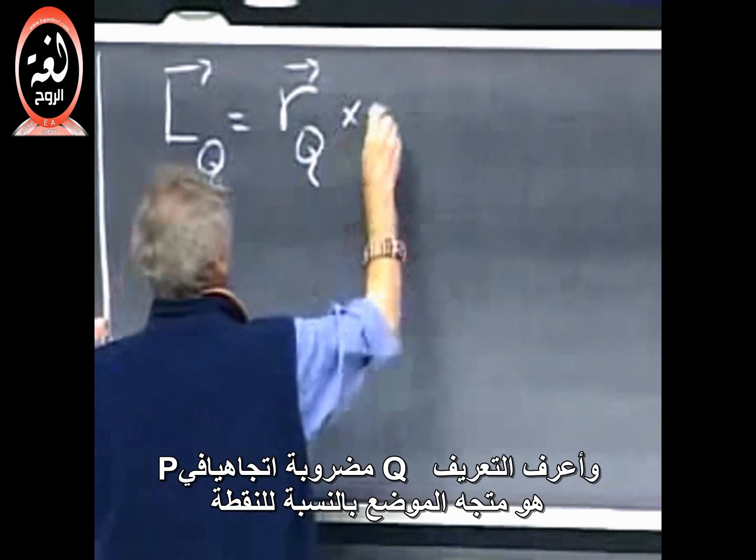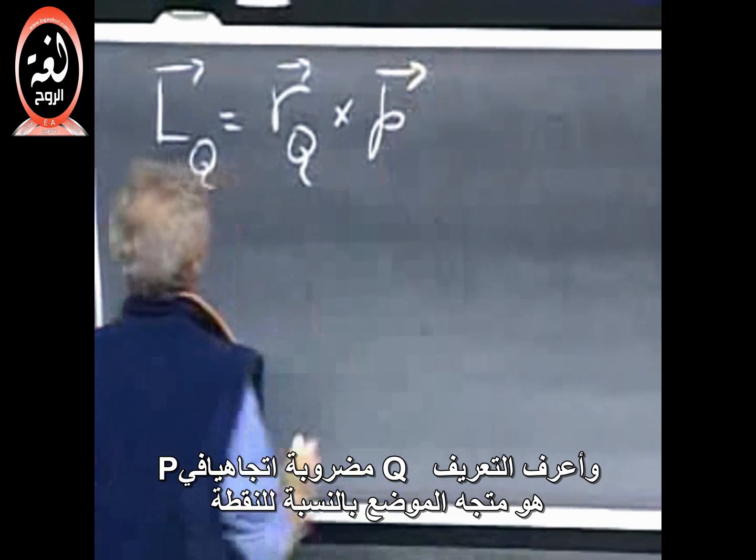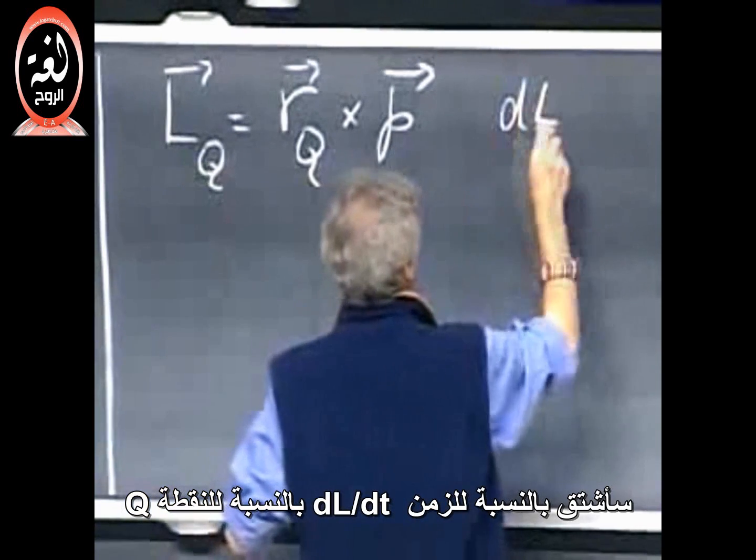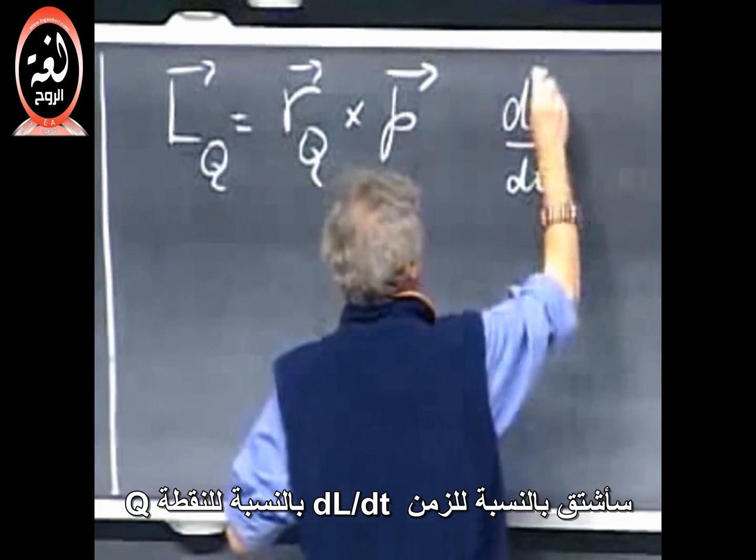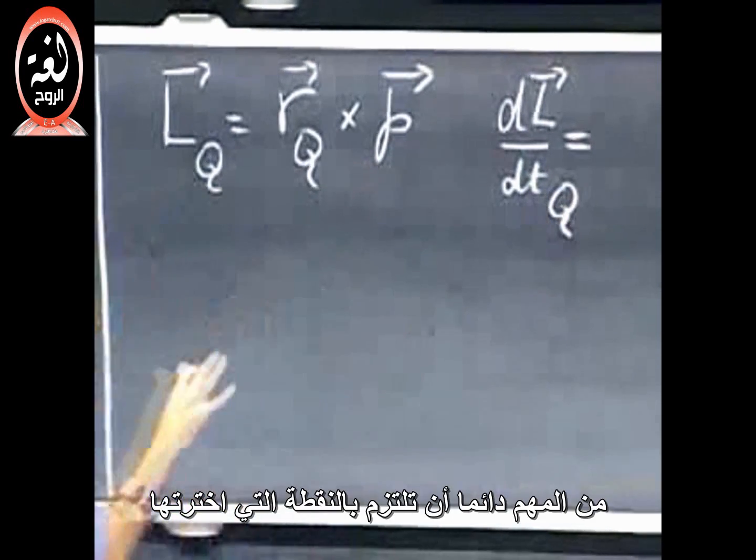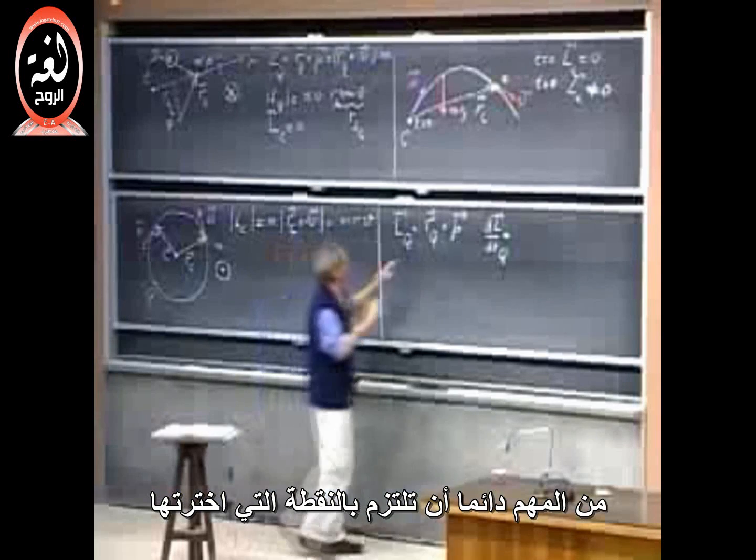Vector relative to point Q cross P. I take the derivative, time derivative, dL/dt relative to that point Q. It's always important that you state which point you have chosen relative to which you take the angular momentum.